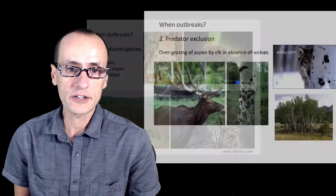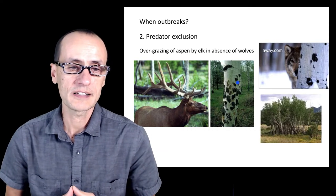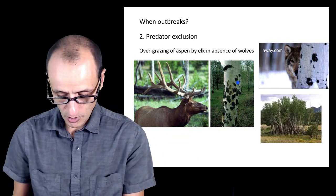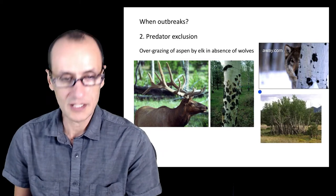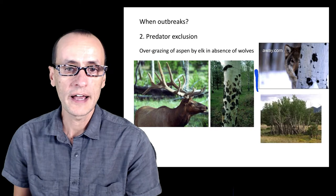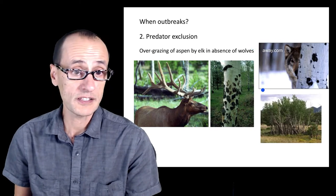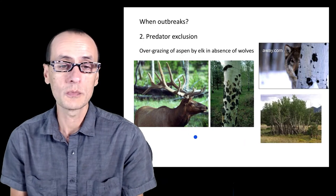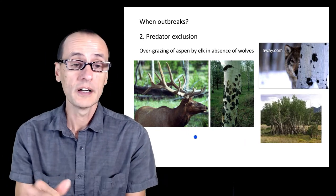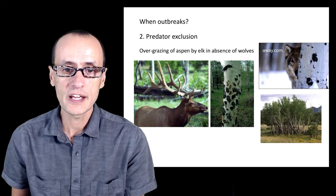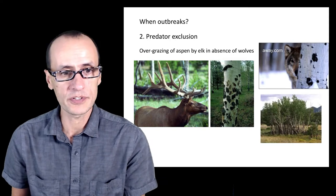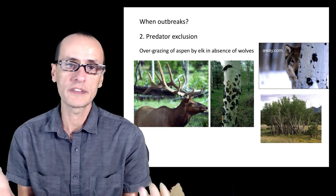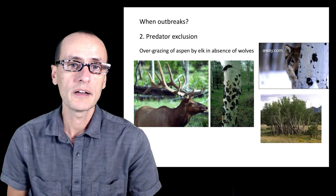Other well-documented examples involve where predators have actually been removed from a particular ecosystem — either through overhunting, as was seen in the Yellowstone area, where wolves were extirpated. The consequence of that is that large ungulate browsers like elk were able to defoliate the riparian vegetation, limiting recruitment of things like poplars along streams. So the vegetation in environments where wolves were removed is completely different than one where wolves are present and able to keep elk under suppression.